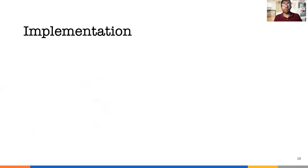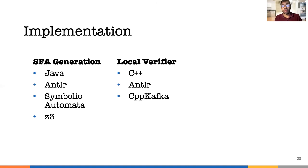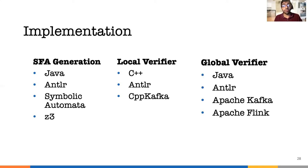Let's come to the implementation. To generate the SFA, we use the symbolic automata and Z3 library. Antlr is used to parse the invariant specification, and our verifier also uses Antlr to parse the SFA. The local verifier uses the C++ Kafka library to output events to the message broker. For our global verifier, we use Apache Flink as it allows us to scale up and provide fault tolerance. Apache Kafka is used as the message broker to distribute the workload to multiple global verifiers.